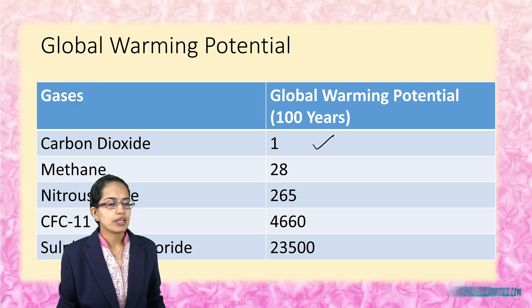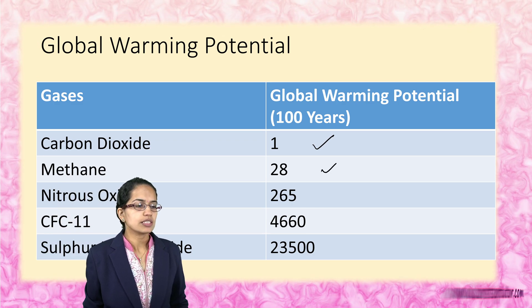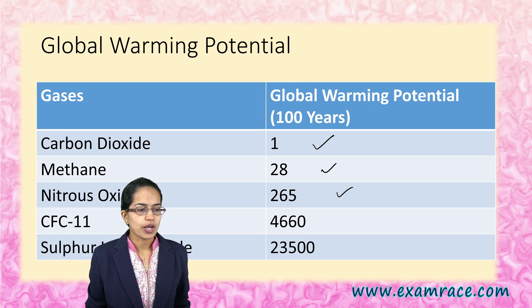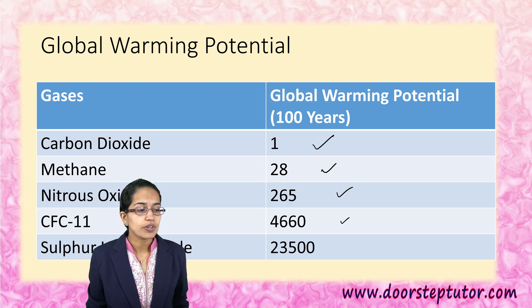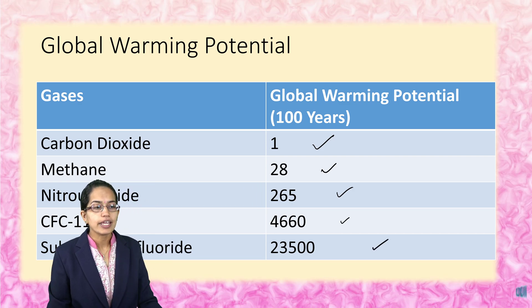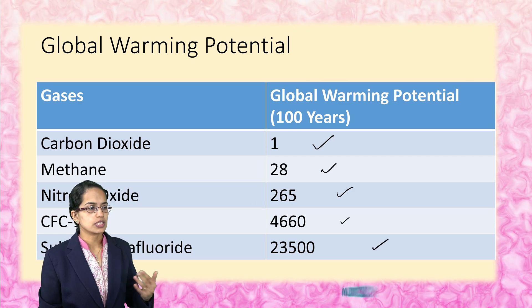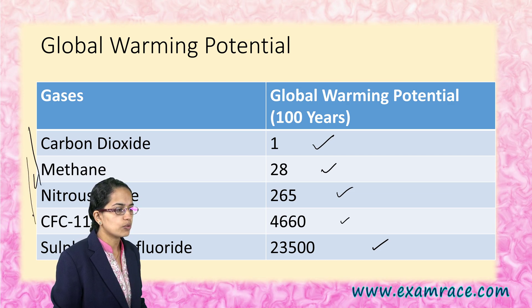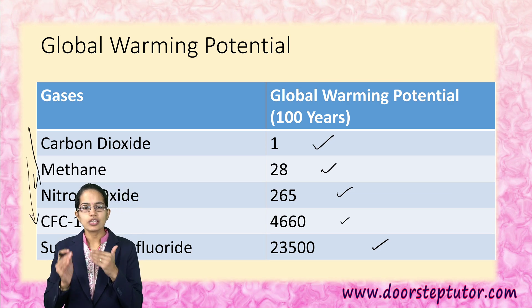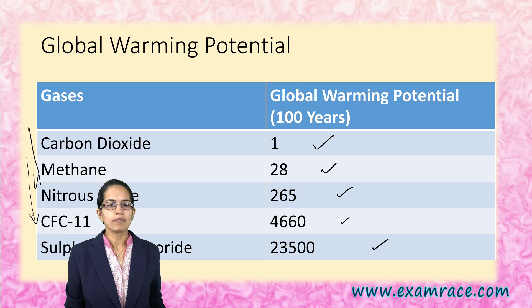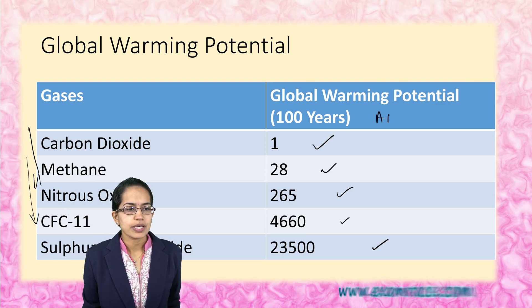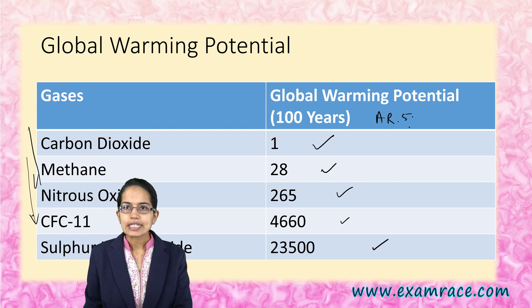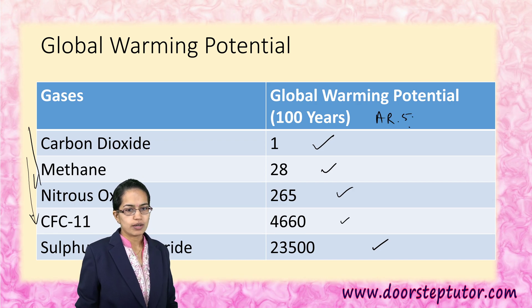Methane would be 28, as we already discussed. Nitrous oxide is next in line. You have chlorofluorocarbons next in line. And sulfur hexafluoride has the highest amount of global warming potential. Sometimes you have a direct order that is asked — which has the lowest, which has the highest — so you need to know the series. And this whole value is based on Assessment Report 5, the latest assessment report.